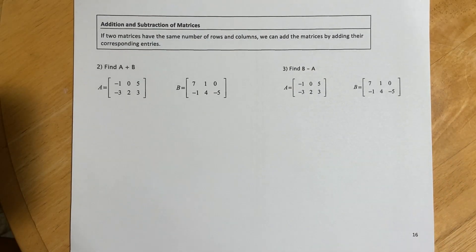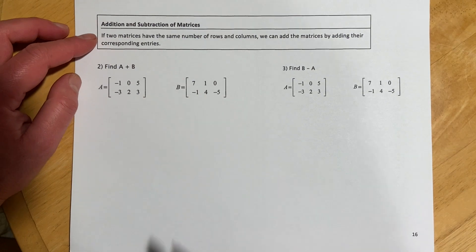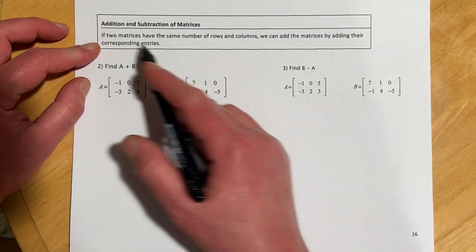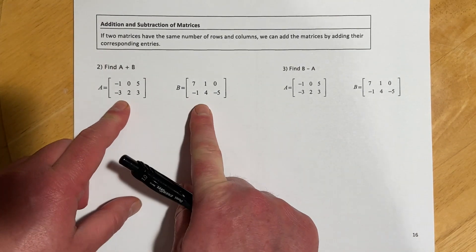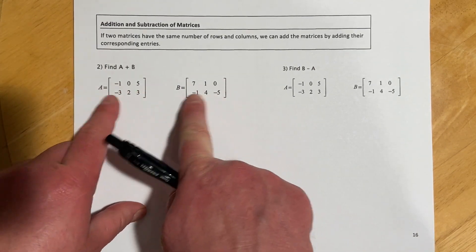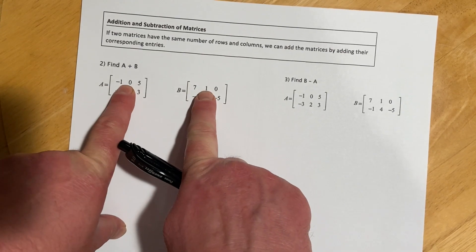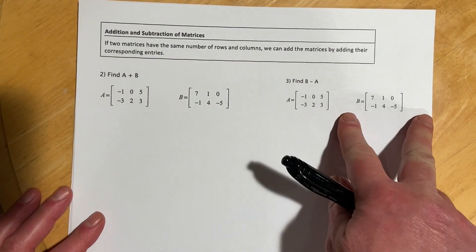So addition and subtraction with matrices. If two matrices have the same number of rows and columns, we can add or subtract them by adding their corresponding entries. So they have to be the same size. And then we just add these two and these two and these two. And that's it. Subtraction, same thing. We just got to be careful of signs.